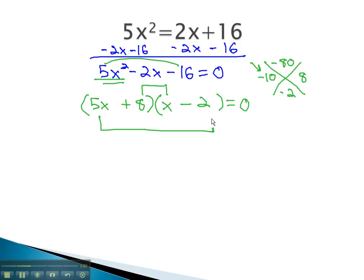Our expression is now factored, so we're ready to solve it. The way we can solve it is setting each factor equal to 0. The 5x plus 8 equals 0, and the x minus 2 equals 0.